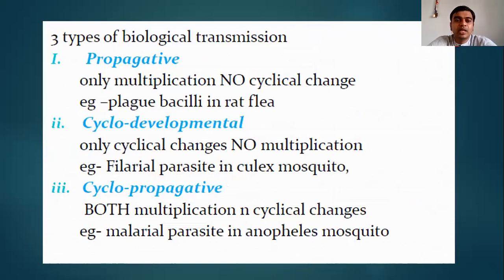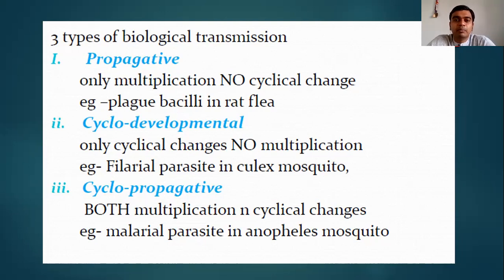What are the types of biological transmission? We have propagative, cyclo-developmental, and cyclo-propagative types. In propagative transmission, there is only multiplication of the disease-causing agent and no cyclical changes. The best example is plague bacilli in rat flea. The rat flea bites rats or small mammals infected with plague bacilli; the plague bacilli multiply in the rat flea. When this rat flea bites susceptible human beings, plague bacilli are inoculated and they get the disease plague. Remember: PP — propagative plague.